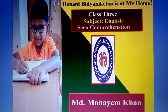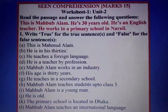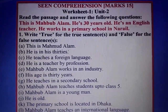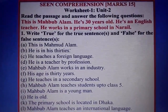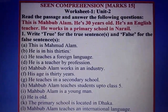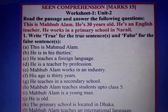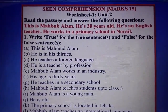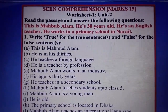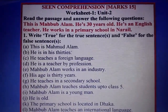You know, in your syllabus for the half-year examination, there will be a Seen Comprehension for 15 marks. This is Worksheet 1. In my other videos I will come with more worksheets. This worksheet is on Unit 2. Here is a passage and there will be some questions on the basis of this passage. So read the passage and answer the following questions.